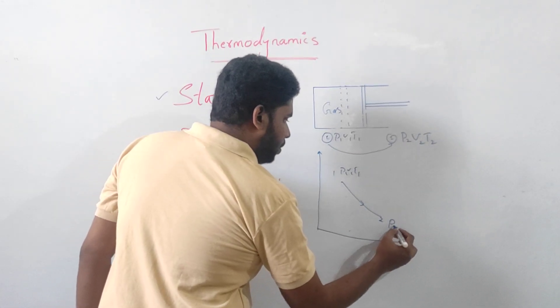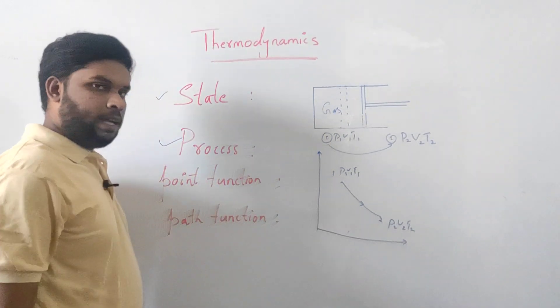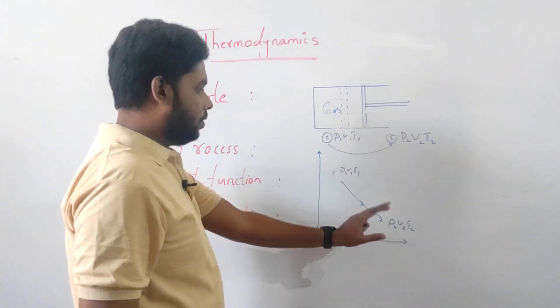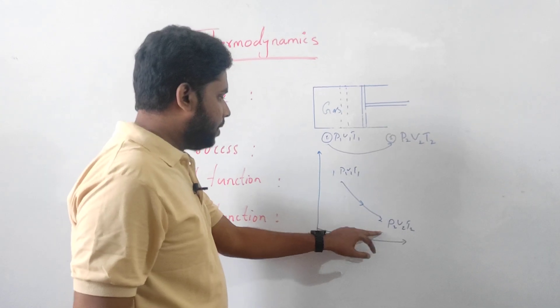At state two, pressure is P2, volume is V2, temperature is T2. We have two states which are represented on graph from 1 to 2.